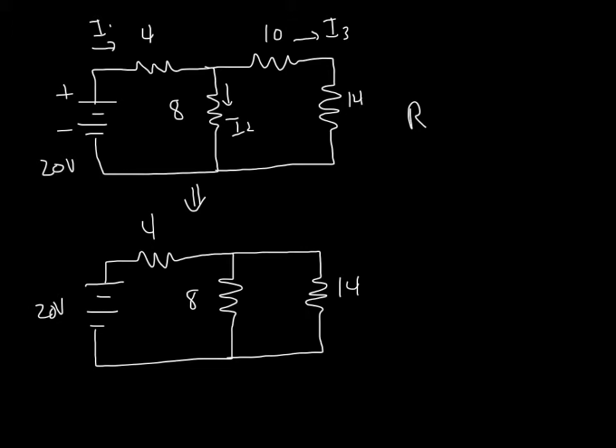So R parallel is 1 over 1/8 plus 1/24. So an 8th plus a 24th, well that's 3/24 plus 1/24, so that's 4/24. So that's going to be 24 divided by 4, which is going to be 6. So this 8 and this 24, we can simplify that and make it a 6.